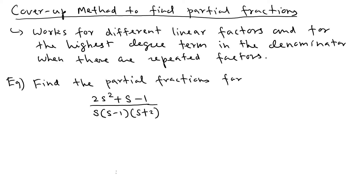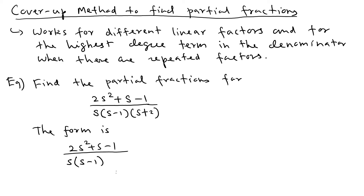Since the factors are all different, we write the decomposition form as: (2s² + s - 1) over s(s - 1)(s + 2) equals A over s, plus B over (s - 1), plus C over (s + 2).